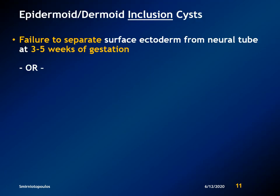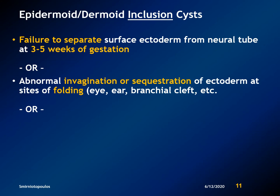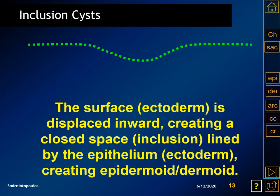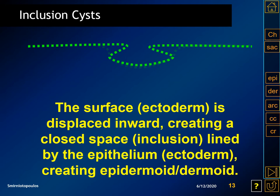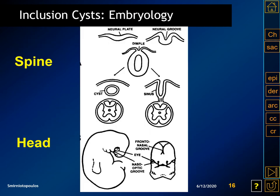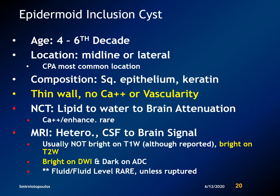Epidermoid and dermoid cysts are inclusion cysts that result from failure to separate the surface ectoderm from the neural tube, typically at three to five weeks gestation. They can also arise from abnormal invagination or sequestration of ectoderm at sites of folding, like in the production of the eye, the ear, and the branchial clefts. They can also result from surgical or traumatic implantation of cutaneous tissues below the surface. These occur in the spine in relationship to faulty closure of the neural tube, and typically occur in the head, especially about the orbit and about the ear.